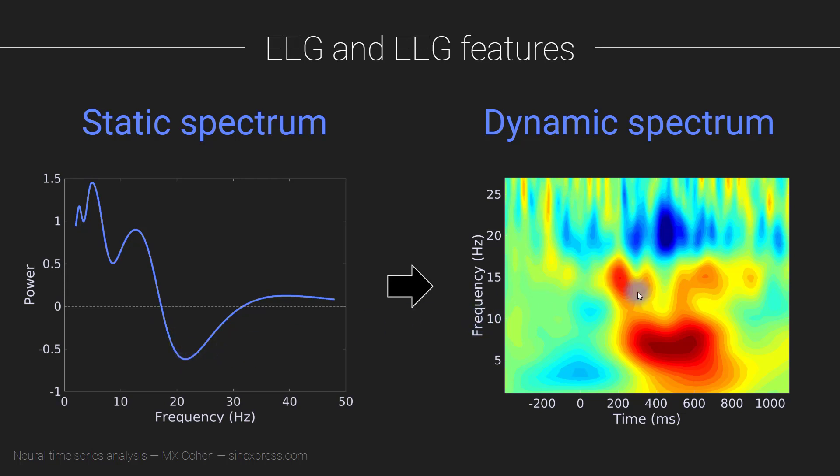So this is a really powerful way of looking at the information in a signal, because we can see not only what are the spectral characteristics, so the changes over different frequency, but also how those changes over frequency are evolving over time. So we got a whole lot of information packed into this dynamic spectrum or this time-frequency plot. So that is the nutshell version of a time-frequency plot.